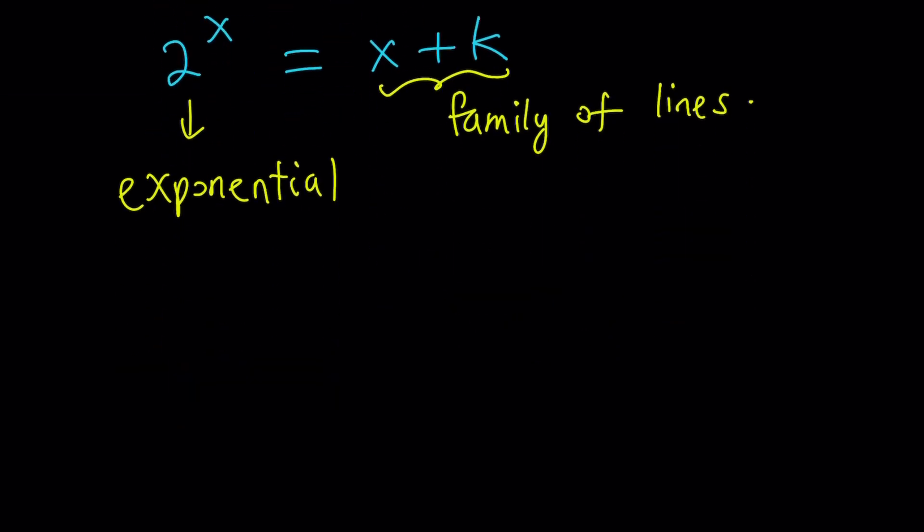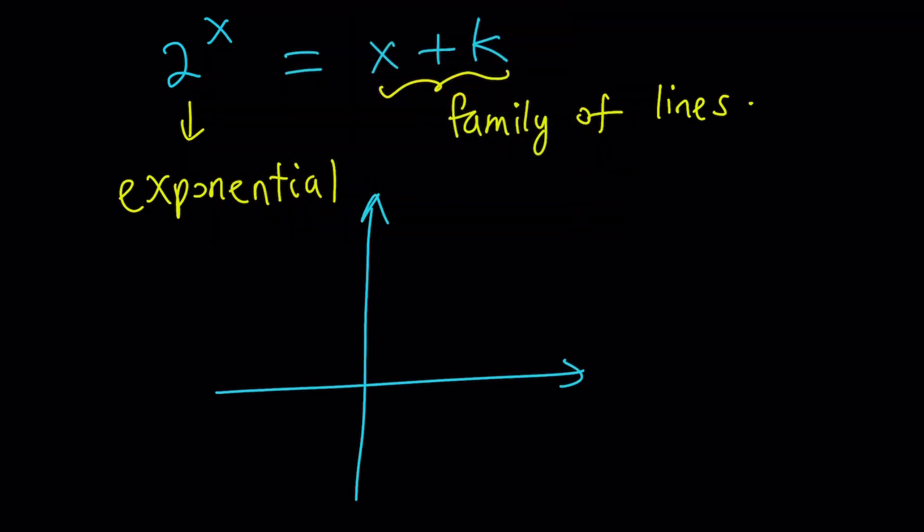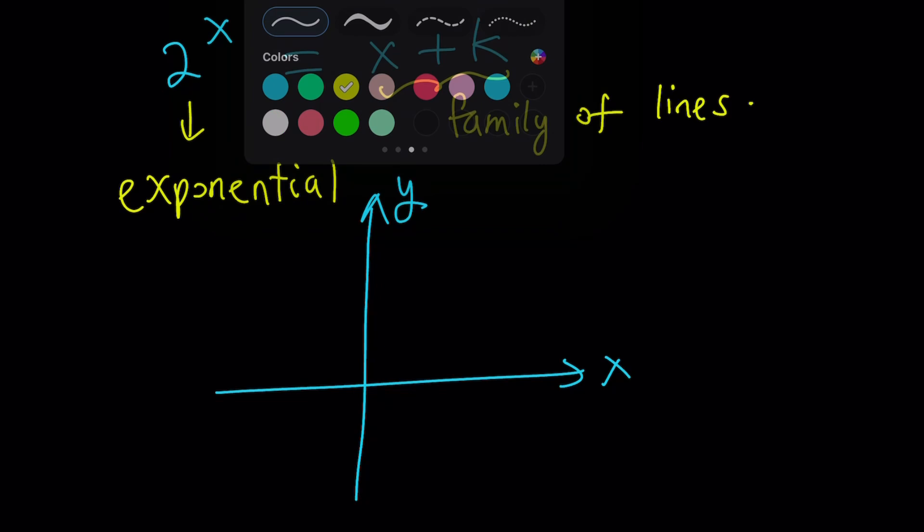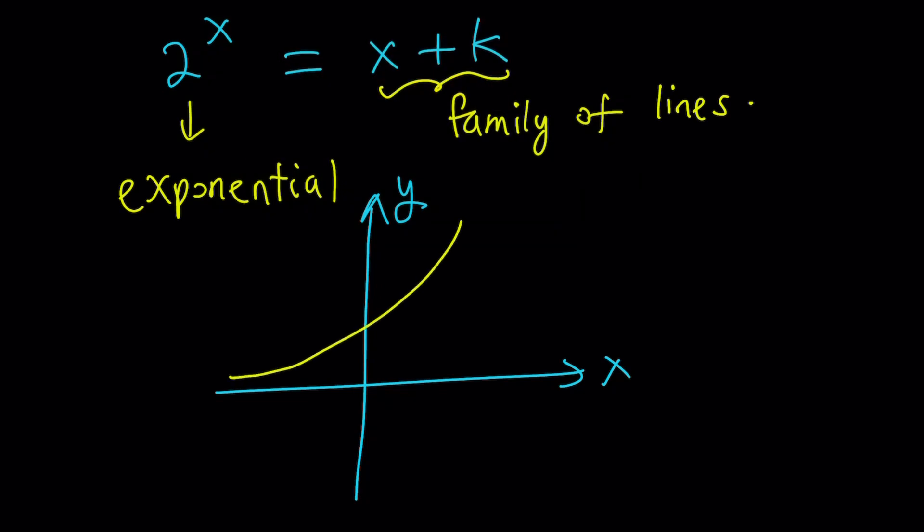So in other words, as k changes, the line moves up or down without changing its slope. So we're going to have something that looks like this. Suppose we have this quick coordinate plane. And we're going to have the y equals 2 to the x, which is going to look something like this. Y equals 2 to the x. This is going to be 0,1.